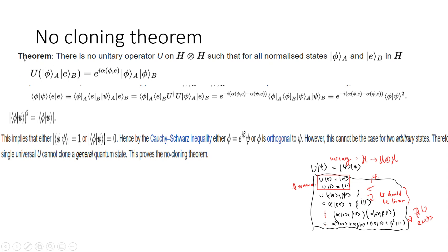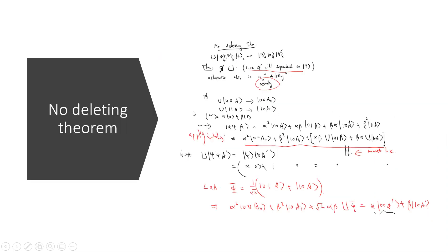This Wikipedia formulation somehow generalizes the previous one, because this U can work for an arbitrary blank state |e⟩ and there is also a phase you can choose. If you take the absolute value, you get the result.